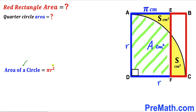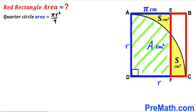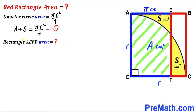Now let's calculate the area of this quarter circle. Recalling the area of a circle formula: area equals π r squared. Since we are dealing with a quarter circle, the quarter circle area is π r squared divided by 4. The total quarter circle area equals the green region A plus the yellow shaded area s, so: A + s = πr²/4. I'll label this as equation number one.